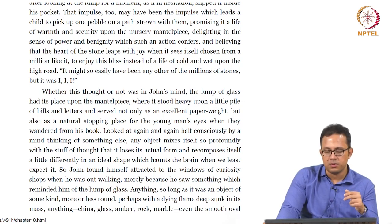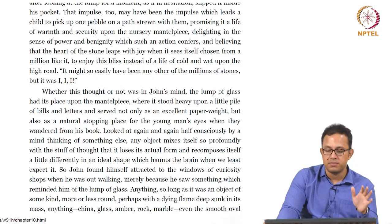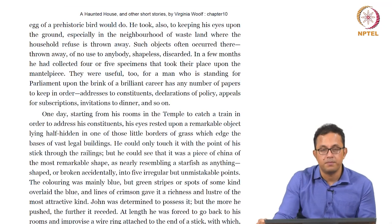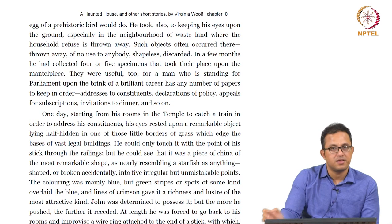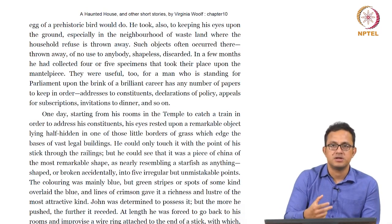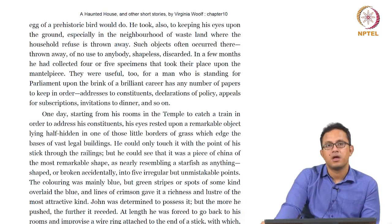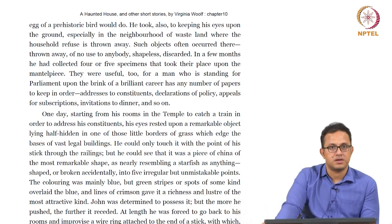The text reads: 'Anything so long as it was an object of some kind — more or less round perhaps — with a dying flame deep sunk in its mass; anything — china, glass, amber, rock, marble, even a smooth oval egg of a prehistoric bird — would do. He took also to keeping his eyes upon the ground, especially in the neighborhood of wasteland where household refuse is thrown away.' This is significant because he is inhabiting rubbish heaps — waste being something produced after consumption is complete.